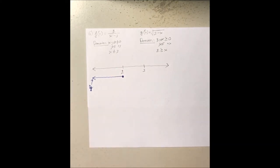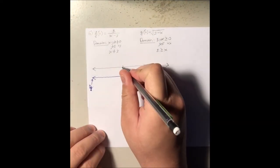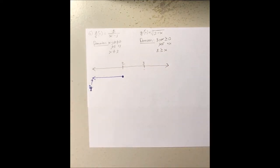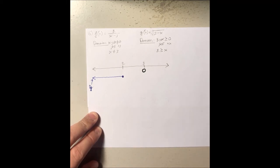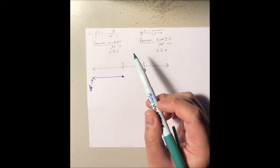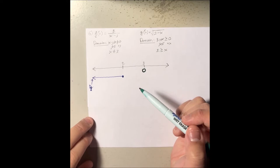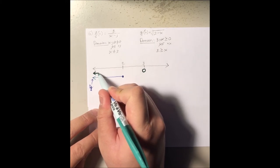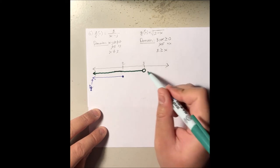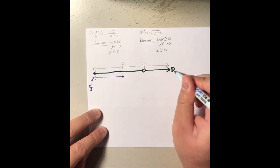For the function f, we put an open circle at the number 3 because x cannot be equal to 3, so we exclude that. Whenever you have a strict inequality, it's an open dot. So the domain is all real numbers from negative infinity up to positive 3, not including it, and then from just after positive 3 all the way to positive infinity.